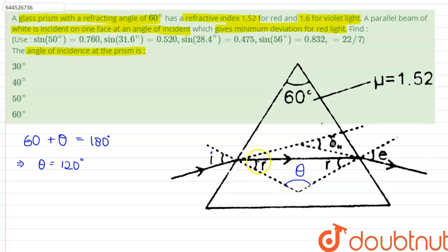And as you can see that this is also a triangle, therefore twice of r plus theta must be equals to 180 degrees. Therefore, this implies that r is equals to 30 degrees. Now applying Snell's law at this point for red light,